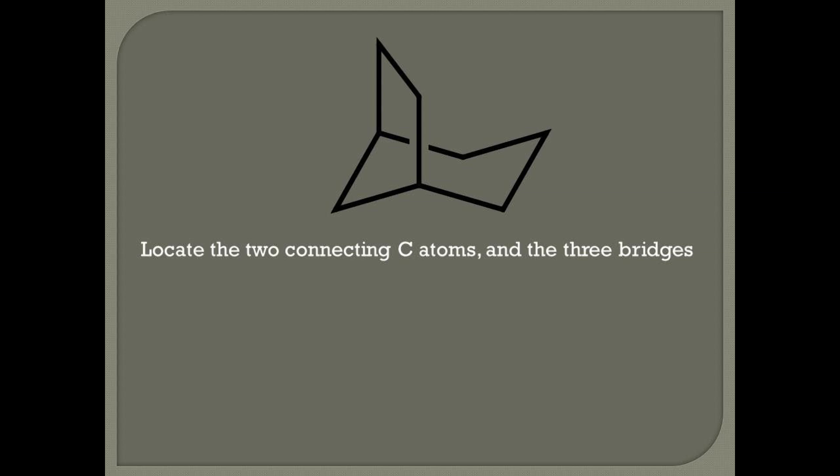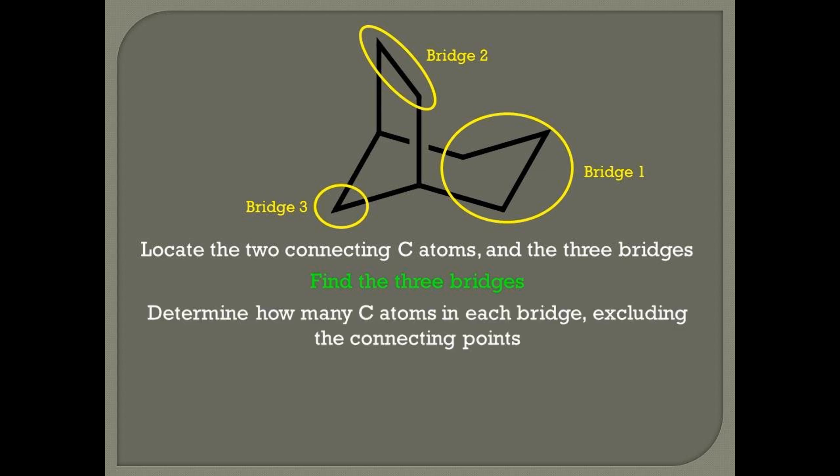Rule 1. Locate the two connecting C atoms and the three bridges. Here are the two connecting C atoms. Let's find the three bridges. Bridge 1, bridge 2 and bridge 3 are shown above.